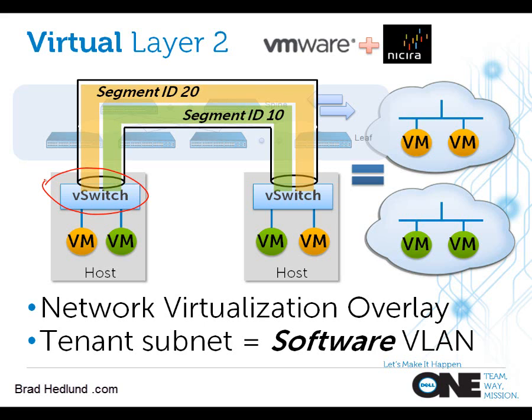So over this network, they built a tunnel, and instead of having VLANs, you simply replace that with an item in the header called, for example, a segment ID. Instead of VLAN 10 and 20, I now have something in an IP header that says 10 and 20.